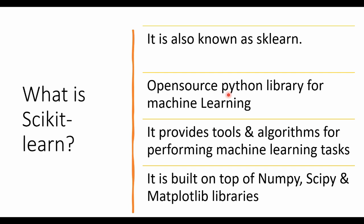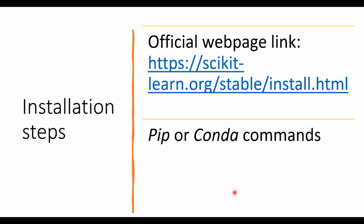That means before we install scikit-learn, we have to make sure that these dependencies are already installed. Before we start using sklearn, make sure that the sklearn library is installed in your system. You can use pip command or conda command. The instructions are given on the official webpage — I will provide the link in the description box. If Anaconda is installed, you can use conda commands. If you are using Google Colab, it comes with a pre-installed sklearn library.